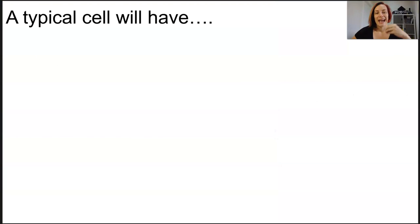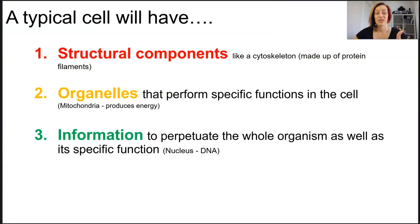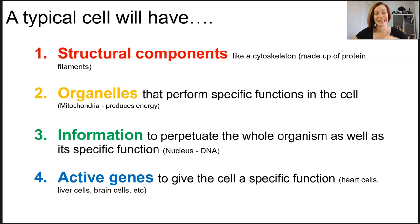A typical cell will have structural components, organelles, information usually in the form of DNA or RNA, and also active genes as a part of that information.